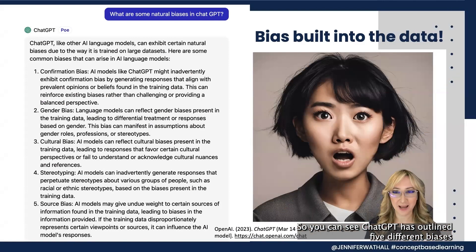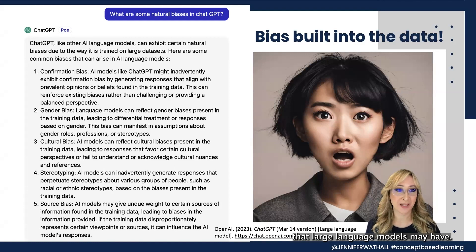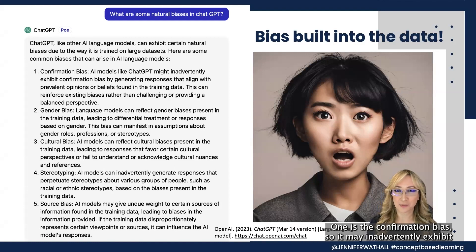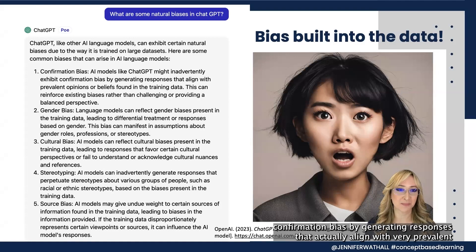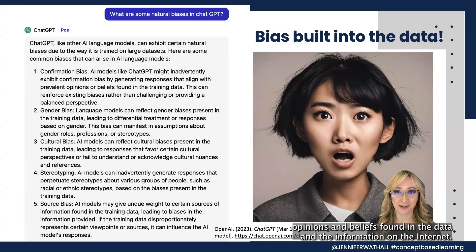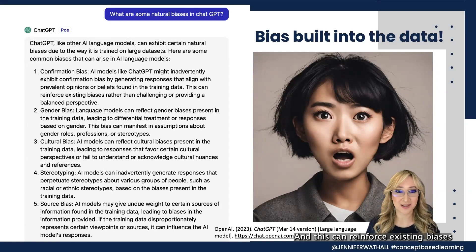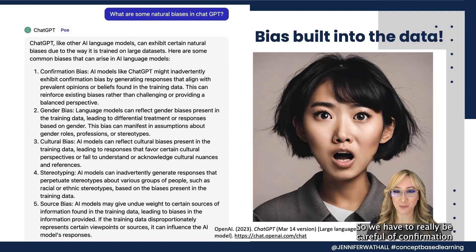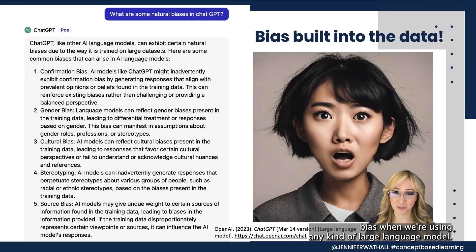ChatGPT has outlined five different biases that AI language models may have. The first is confirmation bias — it may inadvertently generate responses that align with prevalent opinions and beliefs found in data and information on the internet. This can reinforce existing biases rather than challenging them or providing a balanced perspective, so we have to be really careful of confirmation bias when using any large language model.